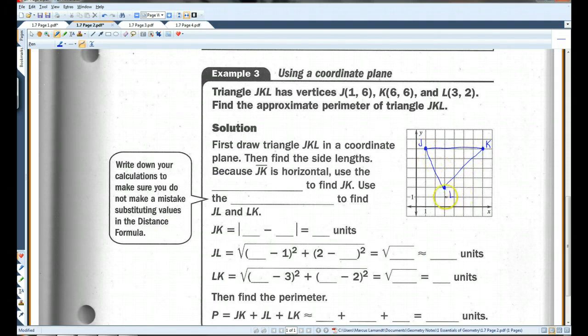So, the perimeter is just going to be the sides added together. Because JK is horizontal, use the ruler postulate to find JK. Use the distance formula to find the other two sides. So, here, we can basically just count to see what this distance is. But these two, we're going to have to use the distance formula to find. For JK, this here, this is 6, and this is 1. So, JK is going to be 6 minus 1, which is 5. This is 5 units.